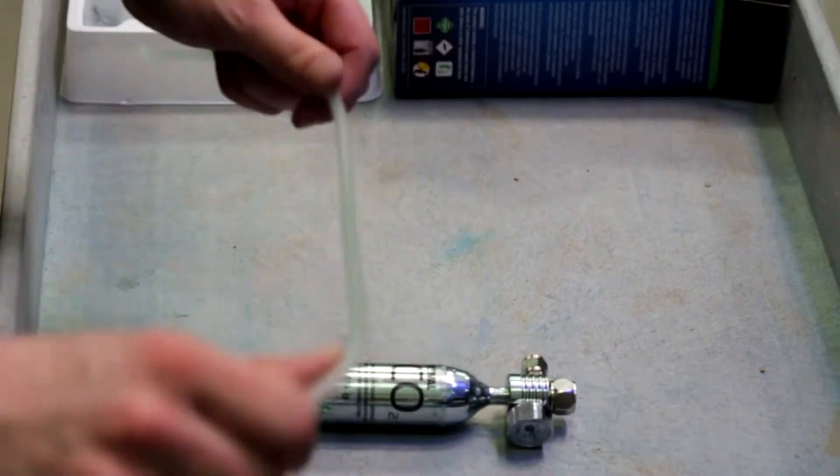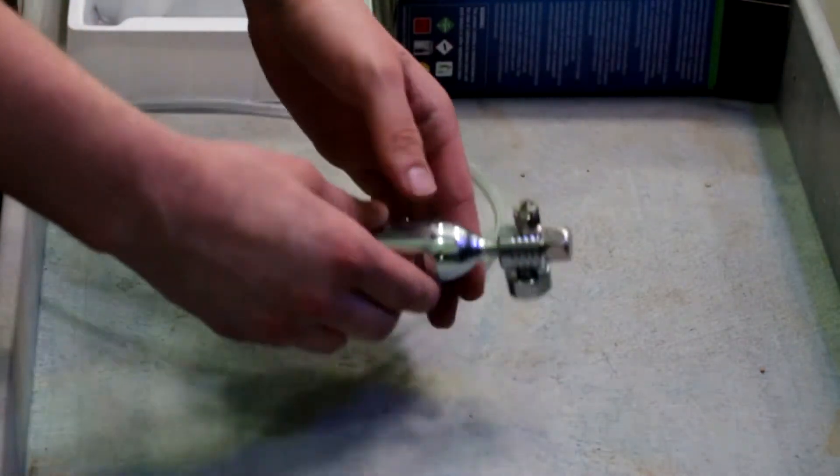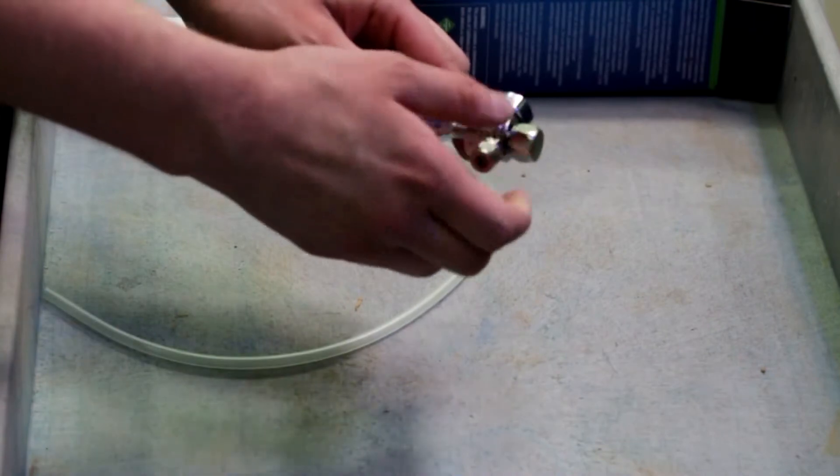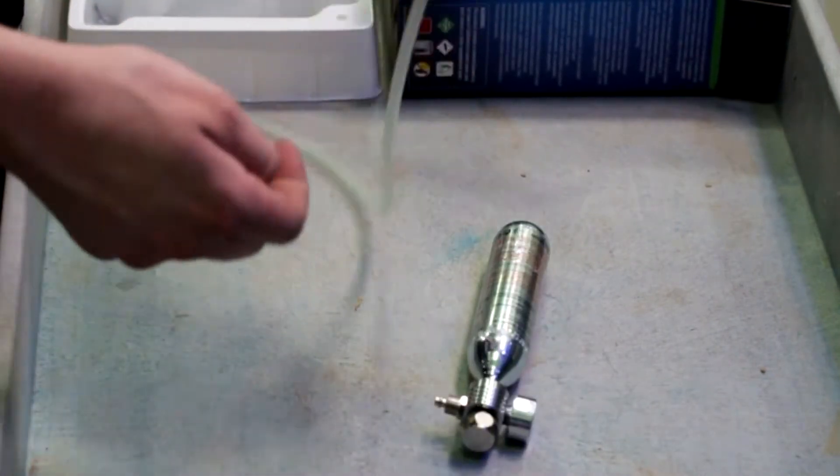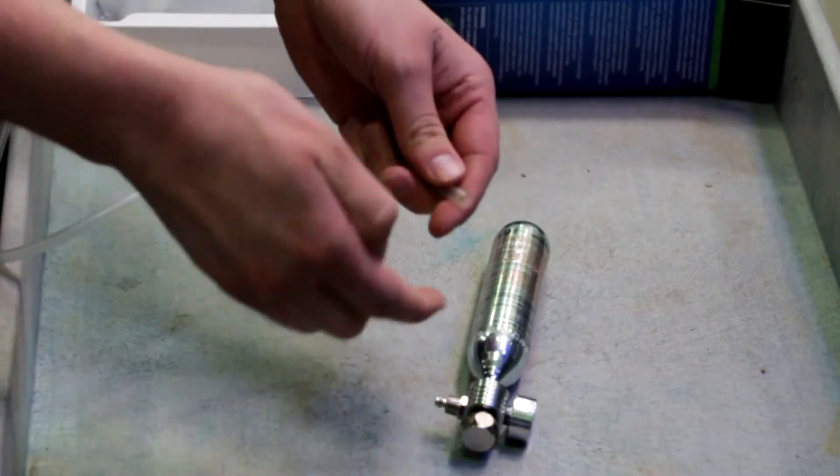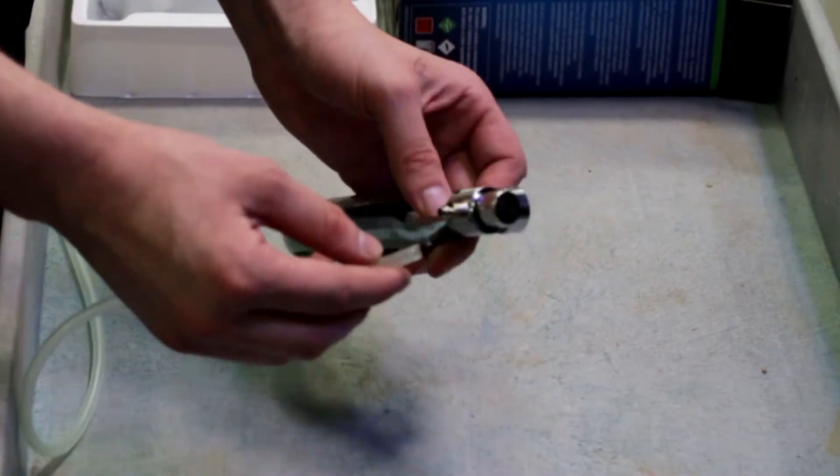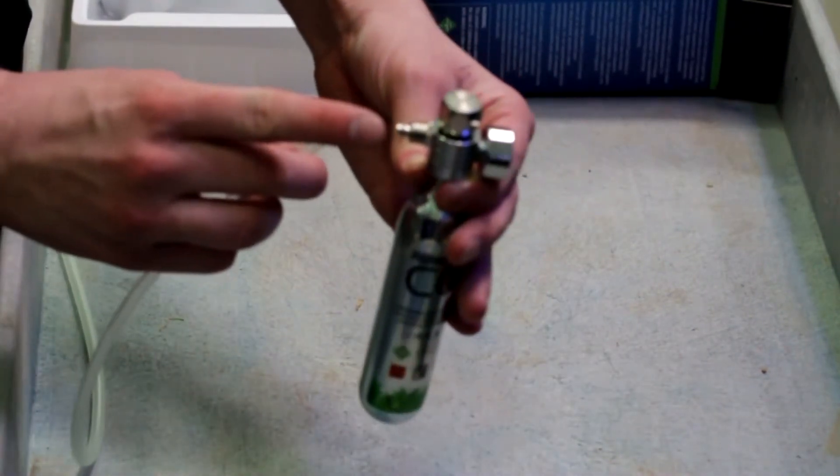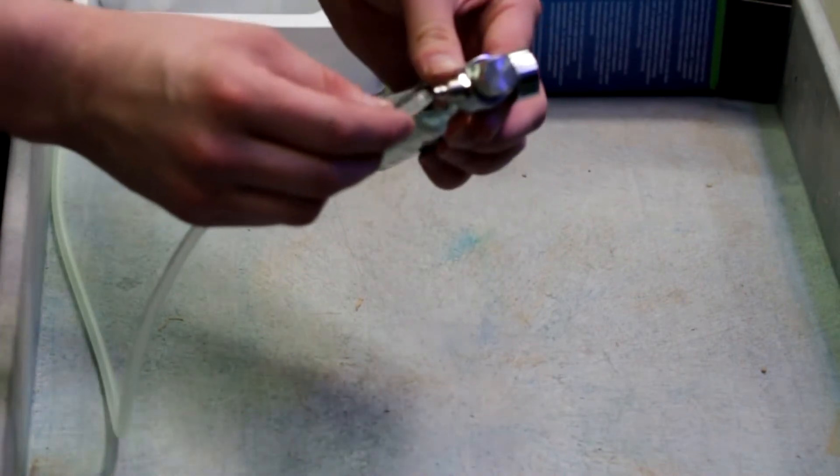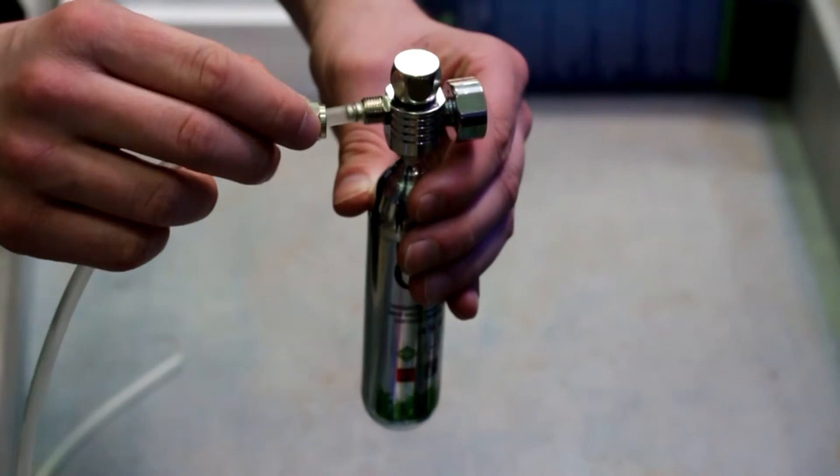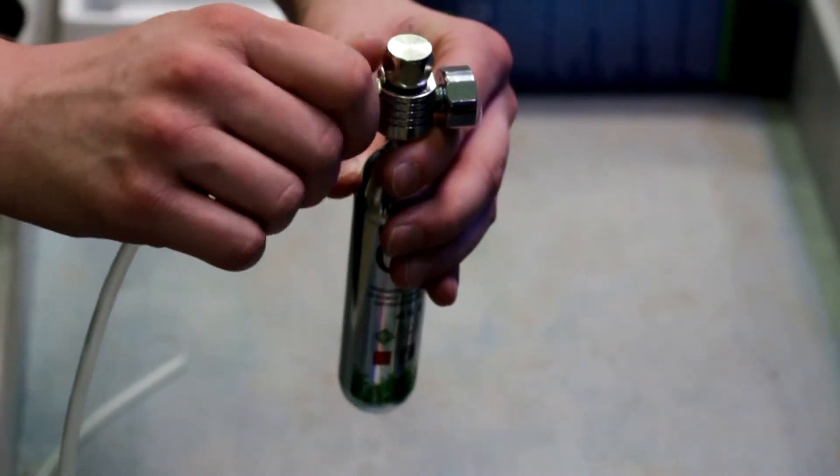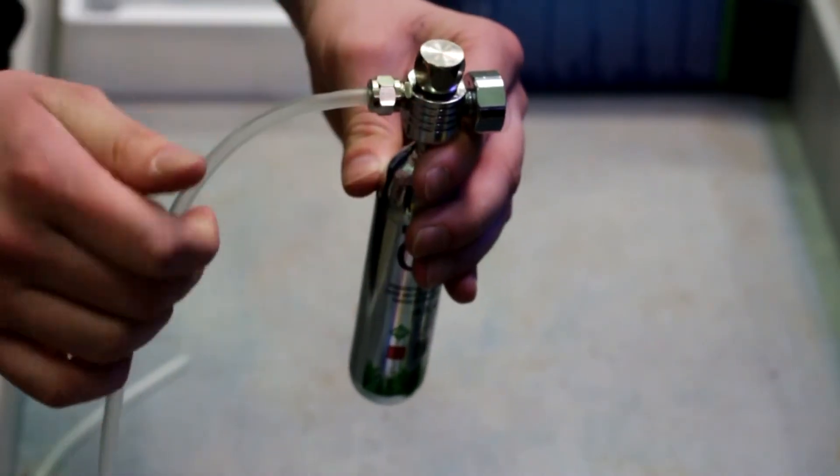Next, grab some of the silicone tubing. There's a little nut on the side of the regulator. Take that completely off and slip it over the end of the silicone tubing. There is a small nipple on the side of the regulator. Attach the tubing onto that. Take this nut again and tighten it on there. Hand tight is fine. You don't need to crank on it.